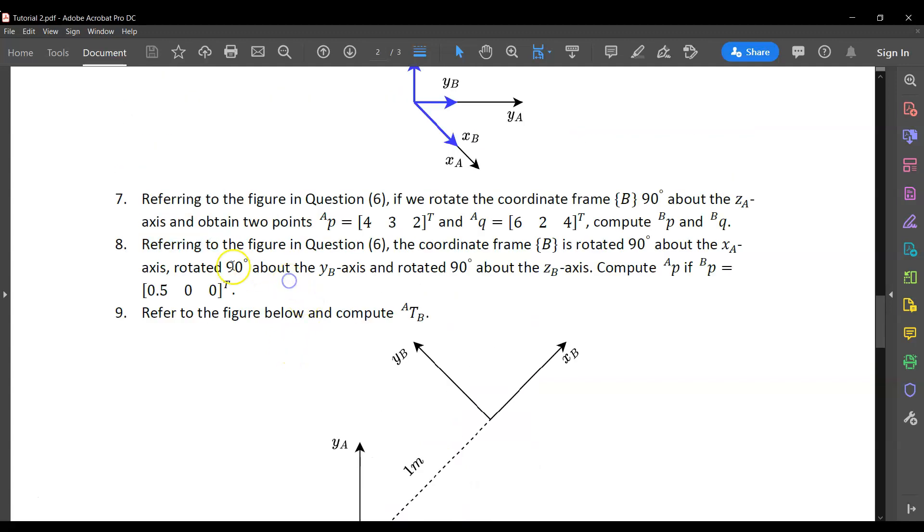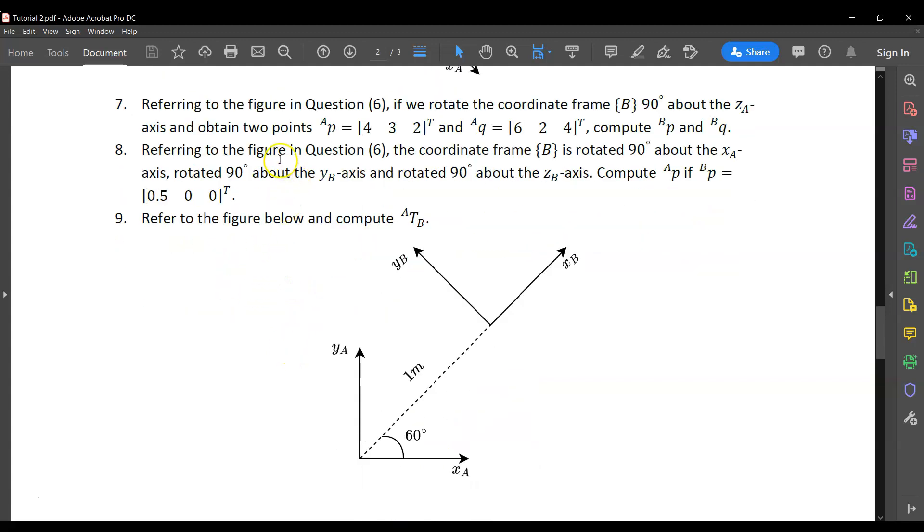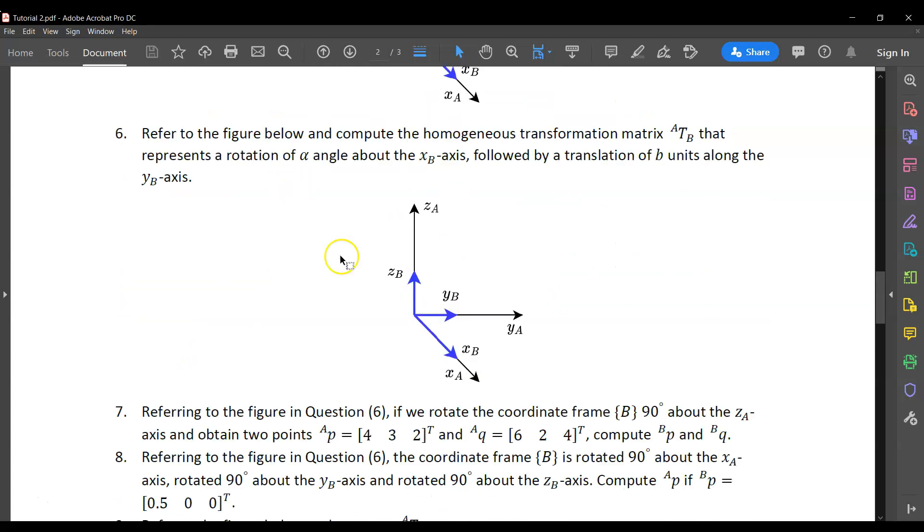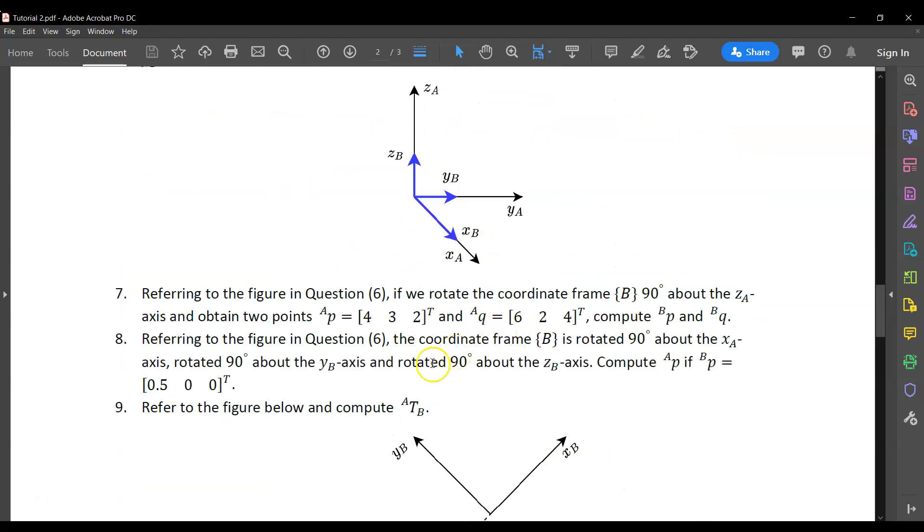So this is question 8. Referring to the figure in question 6, so you have to refer to this figure. The coordinate frame B is rotated 90 degrees about xA axis, rotated 90 degrees about yB axis and rotated 90 degrees about the zB axis. Compute PA if PB is given as such.